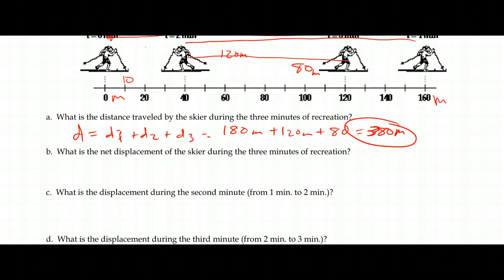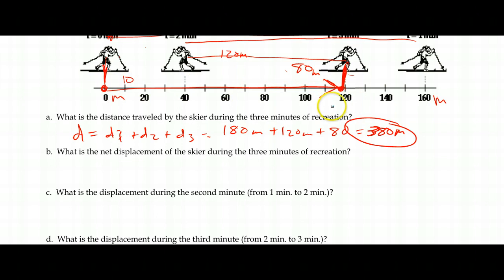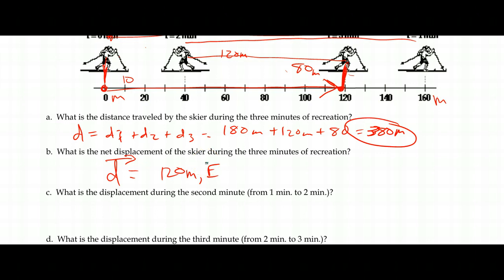Now, displacement of the skier during the three minutes — from point A to point D. Our person has moved from zero to 120. If we draw a straight line with an arrow from where we started to where we finished, that's the displacement. You should draw an arrow over the top to show it's a vector. That's 120 meters from where we started, and we can say it's to the east, to the right, or in the positive direction.